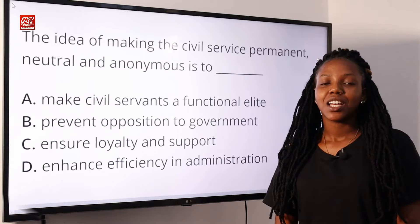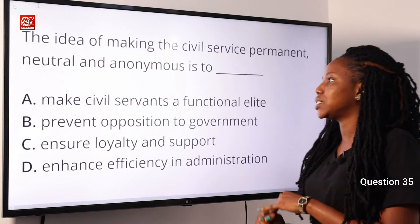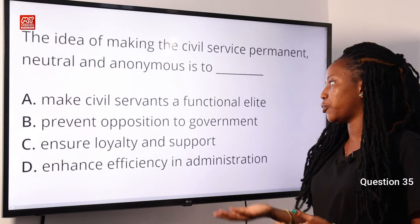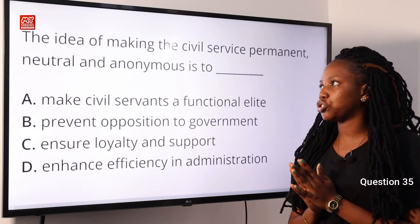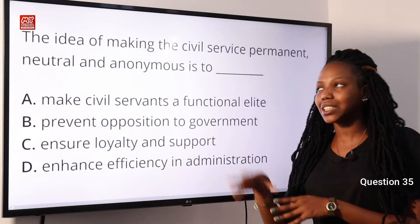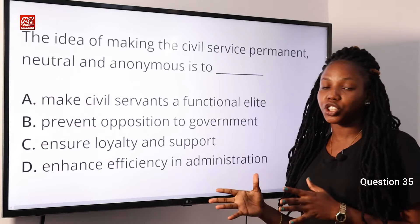Question 35. The idea of making the civil servant permanent, neutral, and anonymous is to dash. Option A, make civil servants a functional elite. Option B, prevent opposition to government. Option C, ensure loyalty and support. Option D, enhance efficiency in administration. The civil servant is a body in the executive arm of government, and this unique feature — permanent, neutral, and anonymous — is to ensure efficiency in administration. Option D is the correct answer.